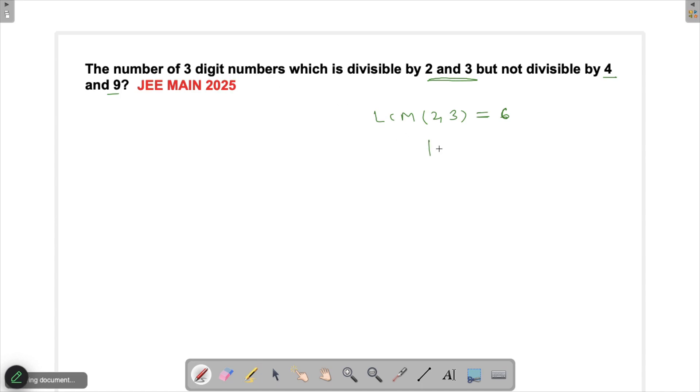My smallest three-digit number is 100 and the largest one is 999. So what I do is divide it by 6 and find the number which is closest to 100 which will be divisible by 6.